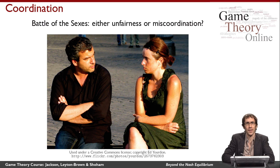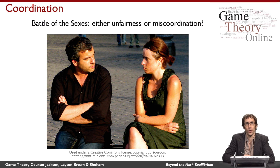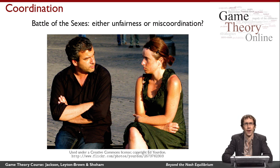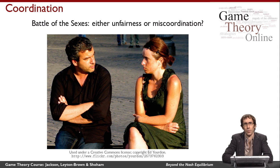Finally, I want to revisit the battle of the sexes and ask: is it really the case that we're doomed either to an unfair outcome, where one member of the couple always gets their preferred activity, or a miscoordination, where the two members end up doing different activities? It doesn't seem like a good model of how people really solve disputes. So I want to think about a new solution concept called correlated equilibrium, in which we're able to achieve fairness without miscoordination.